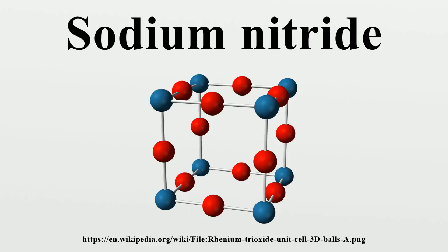Sodium nitride seems to be about 90% ionic at room temperature, but has a band gap typical for a semiconductor. It adopts the anti-ReO3 structure with a simple lattice made up of N-Na6 octahedra. The compound has N-Na bond lengths of 236.6 pm. This structure has been confirmed through X-ray diffraction and more recently neutron diffraction on powder and single crystals.